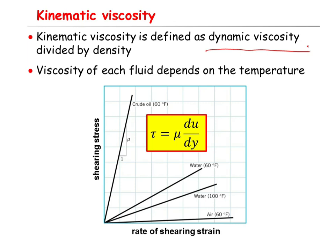This figure shows the relationship between shearing stress as a function of the rate of shearing strain, gamma dot, for different fluids at different temperatures. According to Newton's law of viscosity, tau equals mu·du/dy, the slope of the line between shearing stress versus rate of shearing strain equals the viscosity. So you can see the viscosity of crude oil is more than water, and water is more than air, because the slope decreases as you switch from crude oil to water to air.